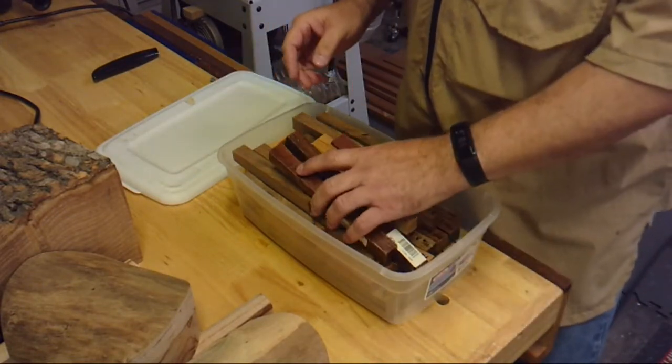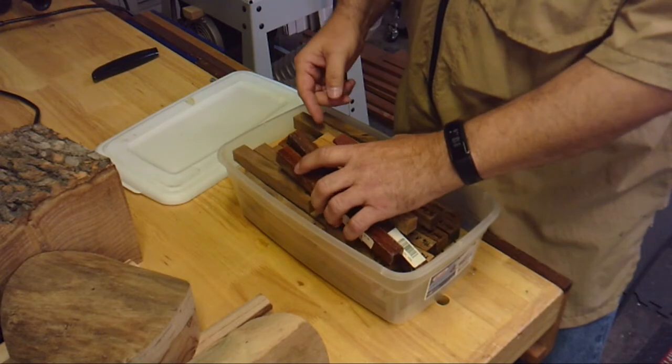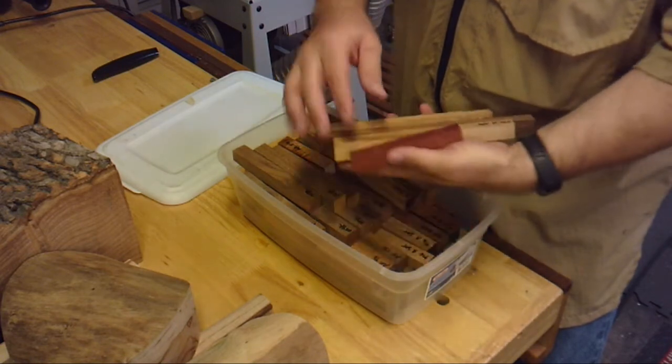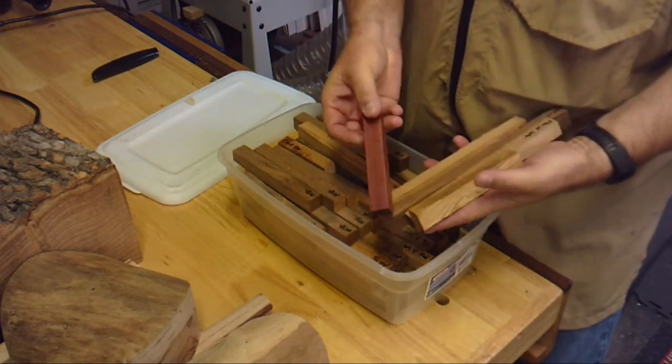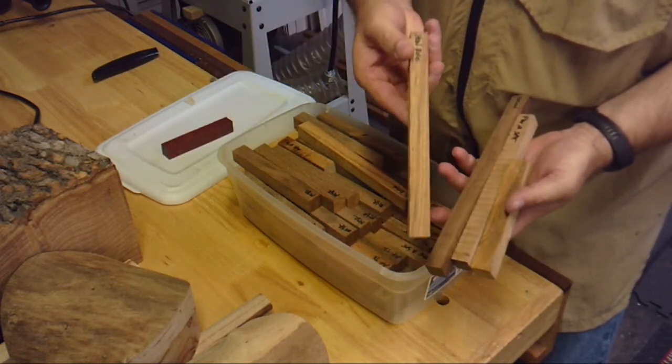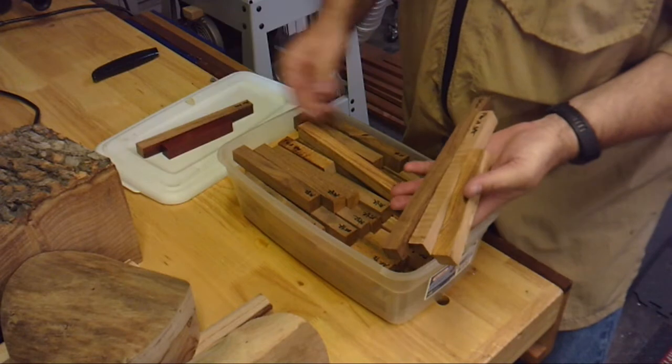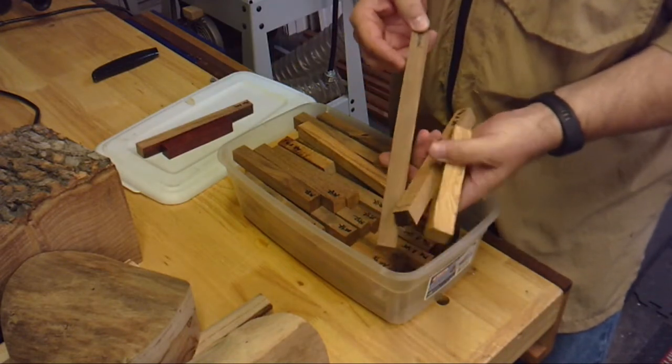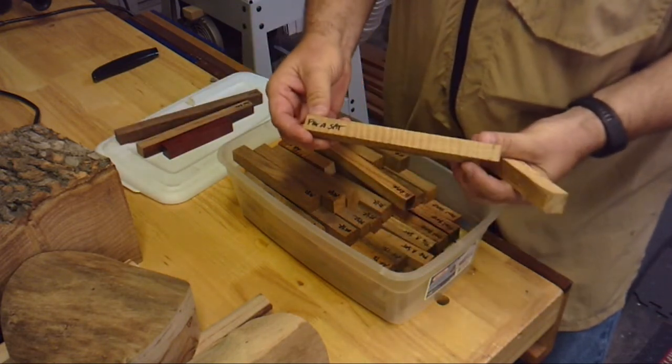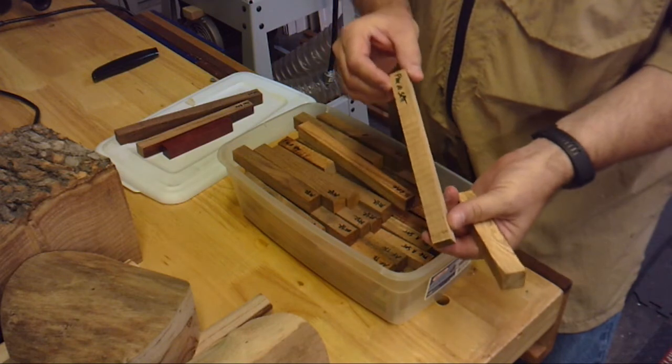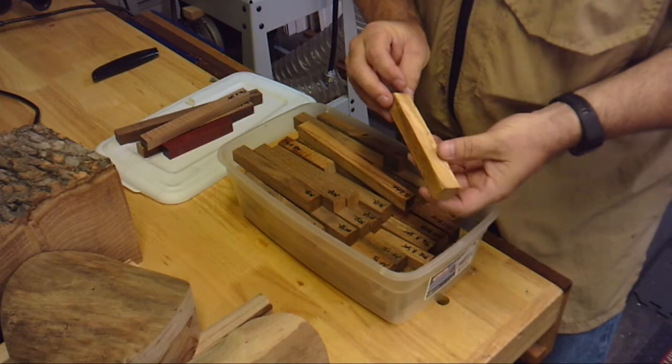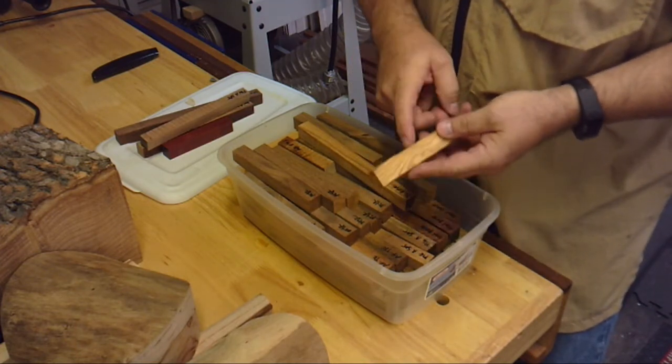I'm going to be doing six pens today. I've got a box of blanks here I've cut up from various stuff. I'm gonna use some bloodwood, this is Honduran rosewood, a grand piece of granadillo, some figured Asian satinwood - you can see the curl in there - and a nice piece of olive wood.